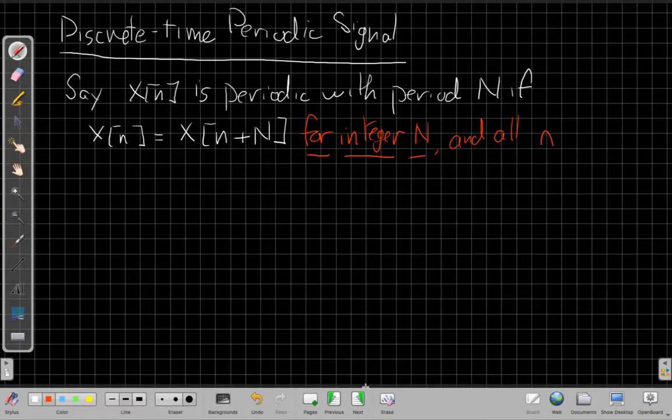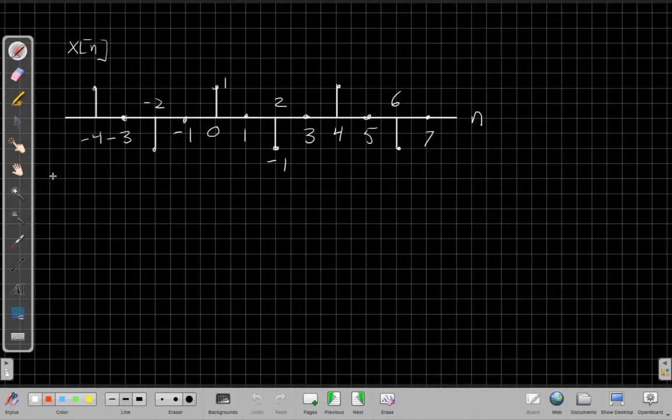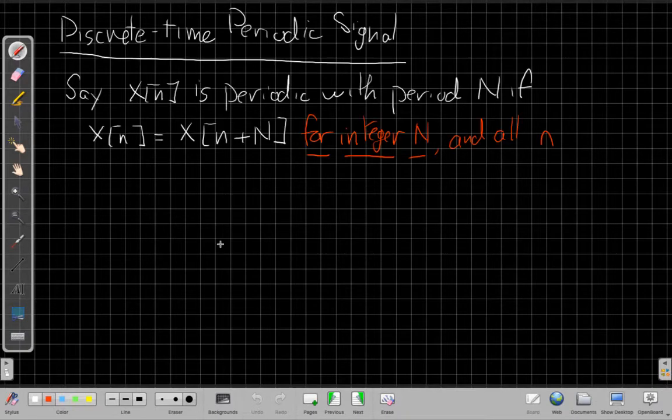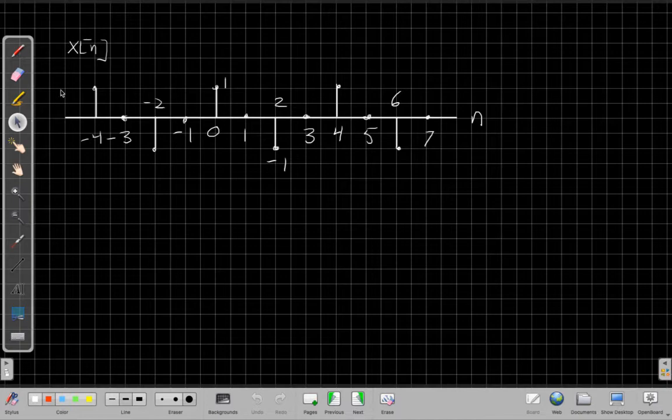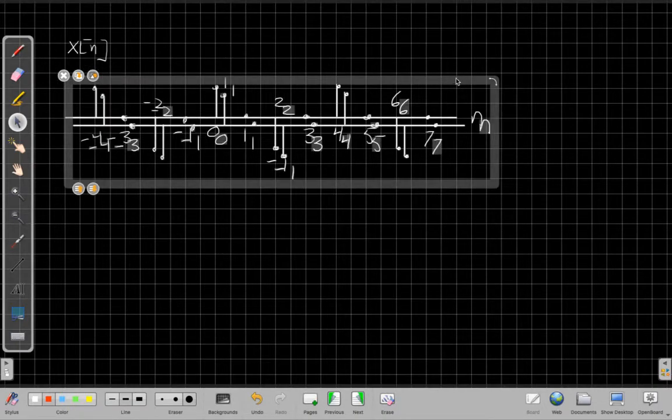So let's look at an example, a graphical example that will give you an intuition of what that looks like. Here's a signal X[n]. If we wanted to see if it's periodic, what this means, if I go back to the definition, is I'm going to shift the signal by N samples to the left or to the right. And if that works, if the signal lines up with itself again when I shift it by N samples, that means N is the period of the signal.